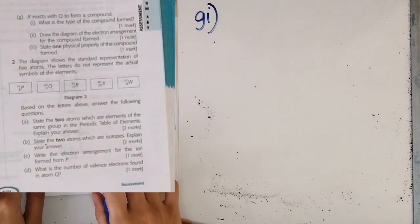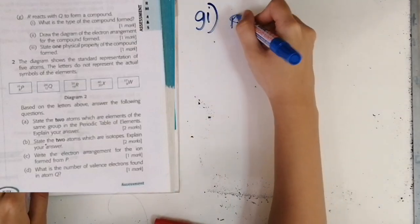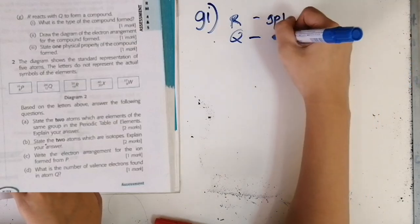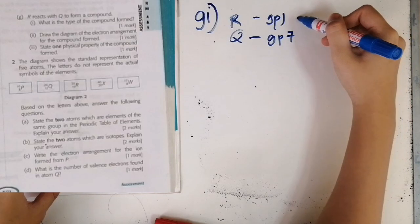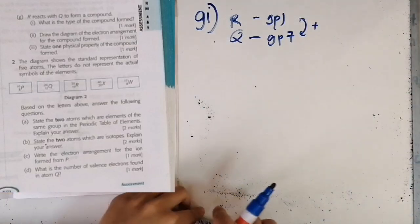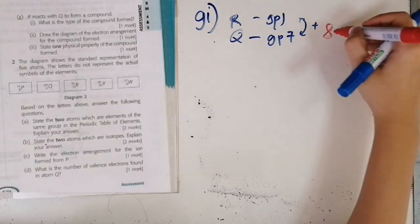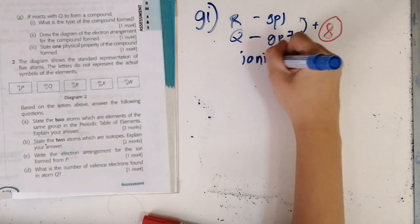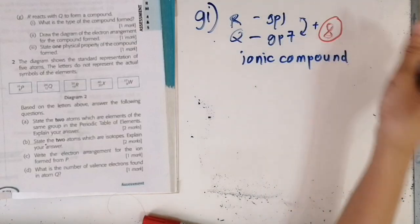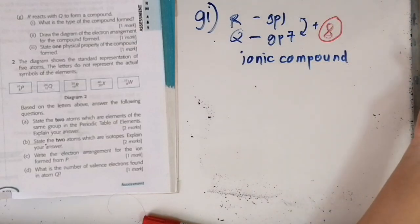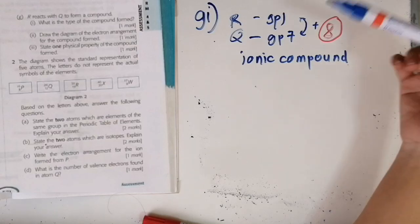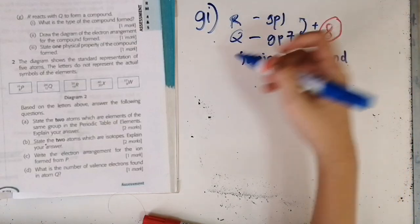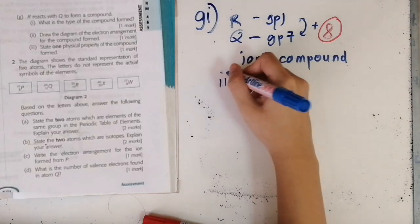Question 1g1: R reacts with Q to form a compound — what is the type of compound formed? R belongs to group one and Q belongs to group 17. When you add the valence electrons: 1 (from group 1) + 7 (from group 17) = 8, which is the number for a stable octet electron arrangement. Getting 8 means the compound formed is an ionic compound. If it were covalent, you wouldn't get 8 when adding the valence electrons together.